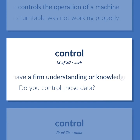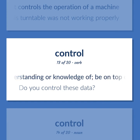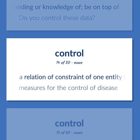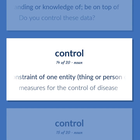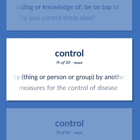CONTROL: Have a firm understanding or knowledge of; be on top of — do you control these data? A relation of constraint of one entity, thing, or person or group, by another — measures for the control of disease.